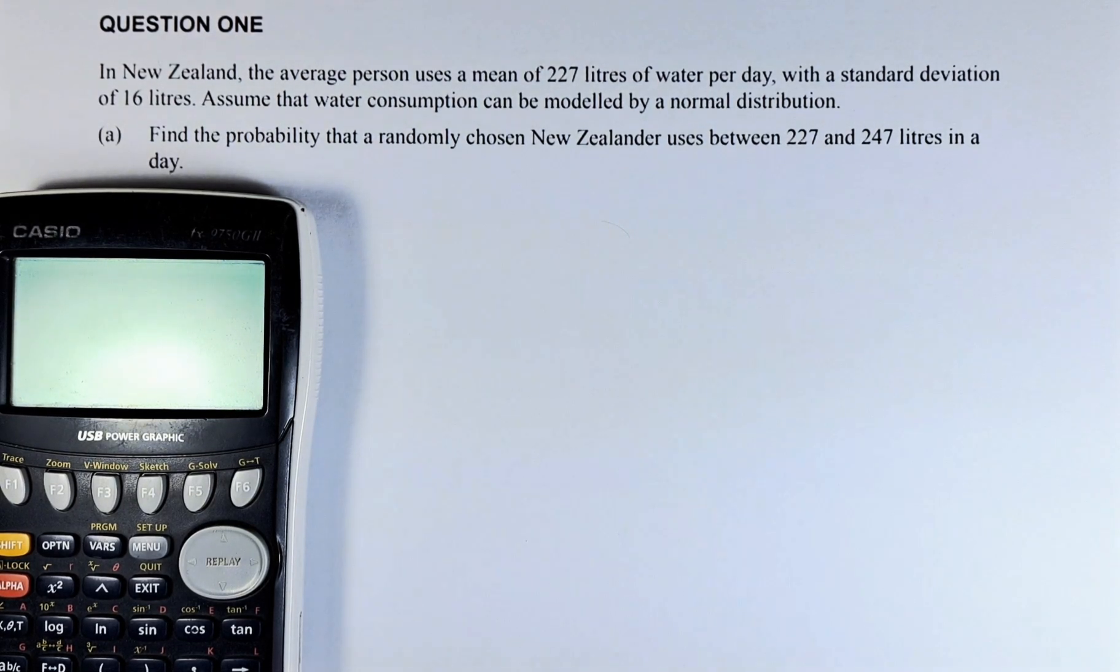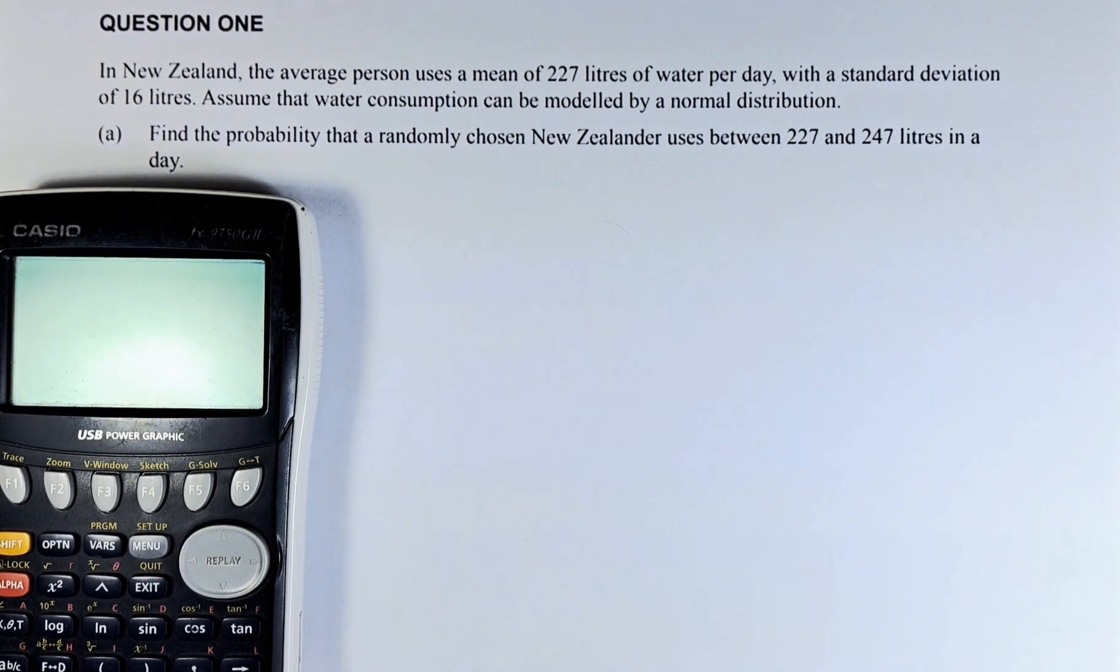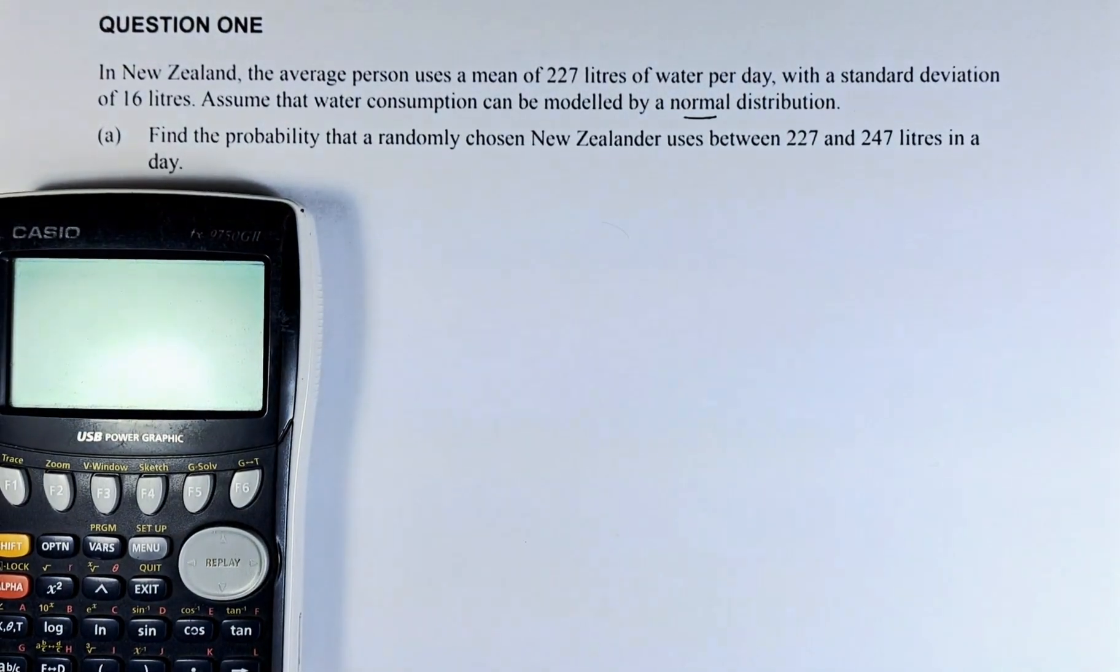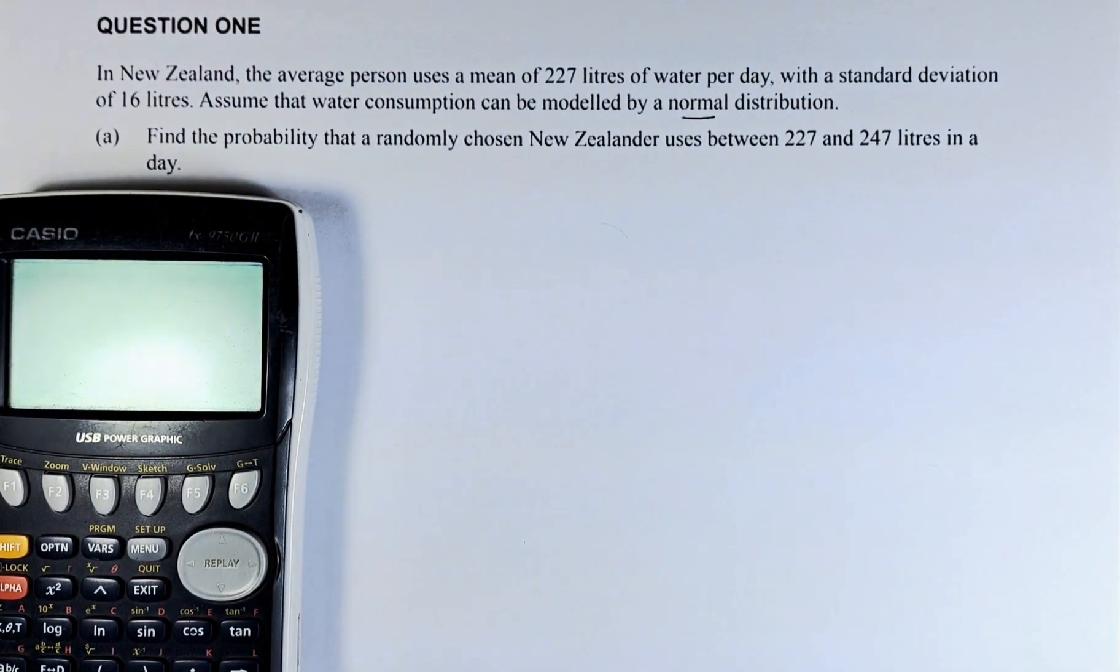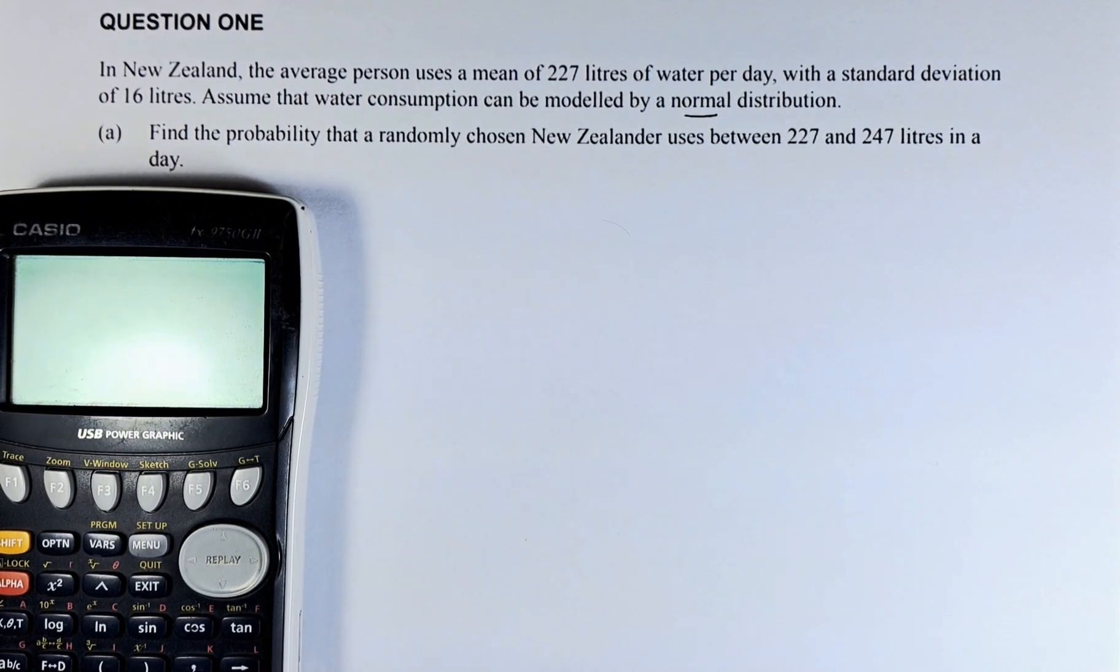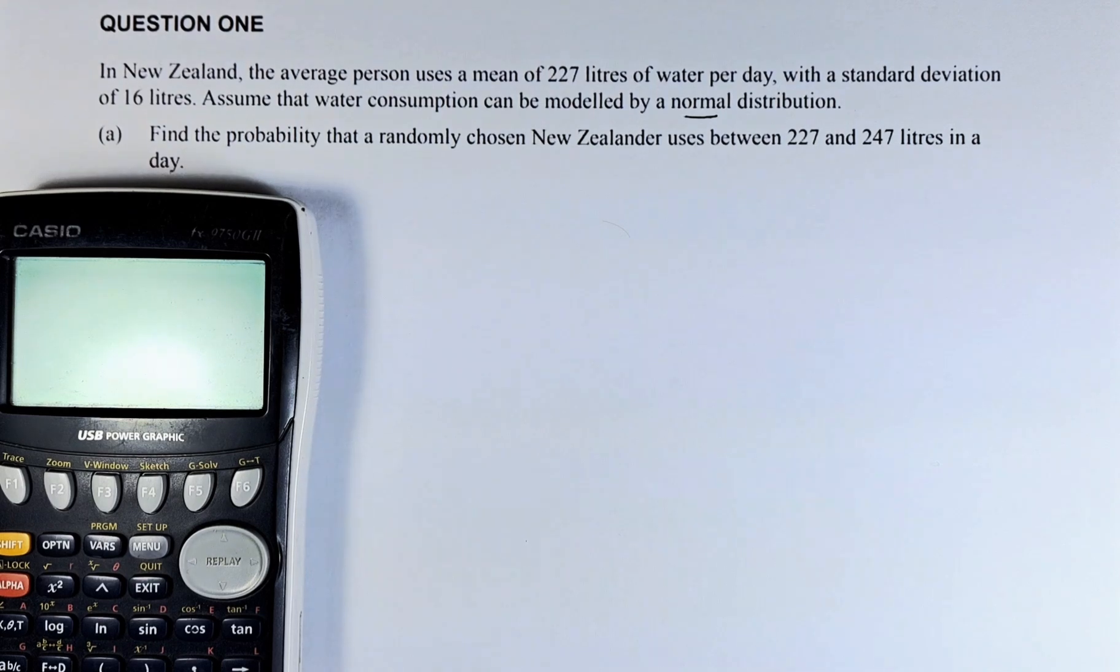In New Zealand, the average person uses a mean of 227 litres of water per day with a standard deviation of 16 litres. Assume that the water consumption is modelled by a normal distribution. This is a normal distribution question. Find the probability that the randomly chosen New Zealander uses between 227 and 247 litres in a day.